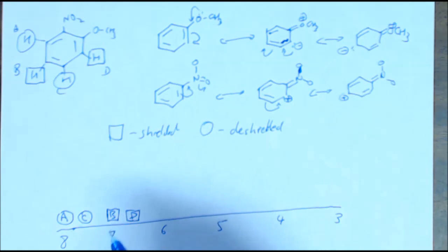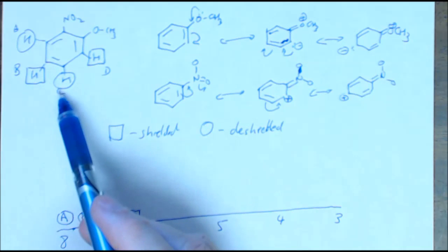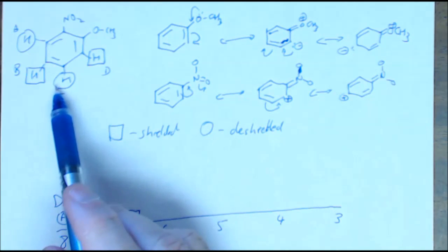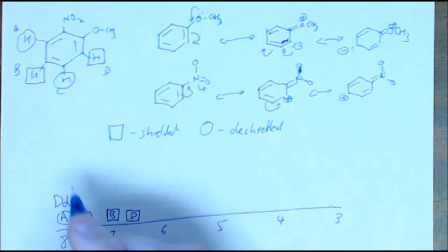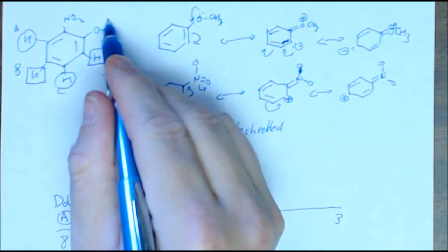Now the coupling constants I expect to see, I'm going to write in here. So A, this guy, only has an ortho and a meta coupling. So what I expect to see for this one is a big coupling and a little coupling. For C here, I've got two orthos and a meta. So I expect to see two big couplings and a little meta coupling. For B, same thing. Big, big, little. And for D, I expect to see that kind of coupling pattern.